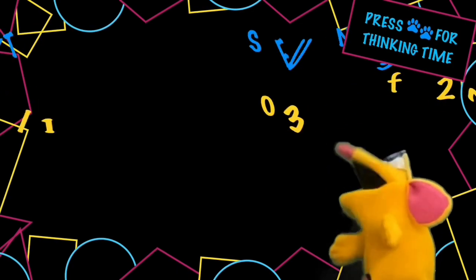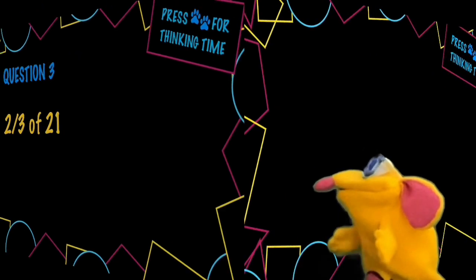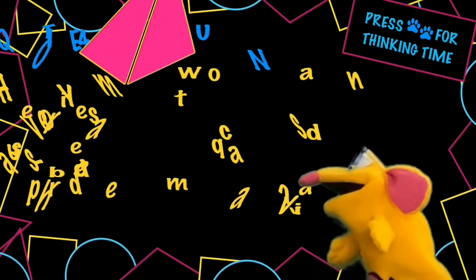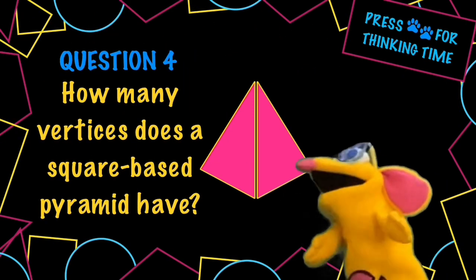Question three, what is two thirds of 21? Question four, how many vertices does a square based pyramid have?